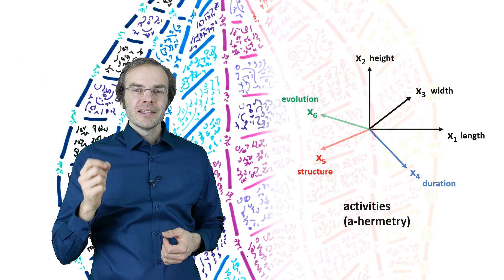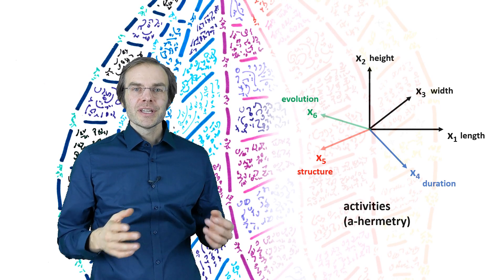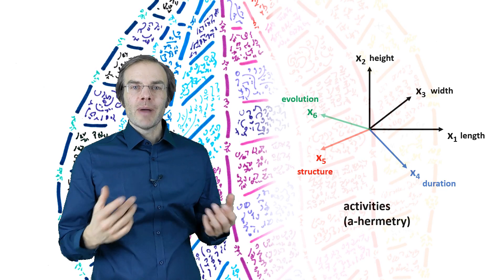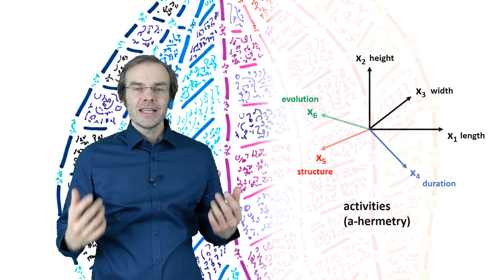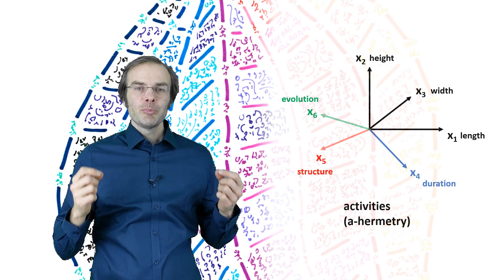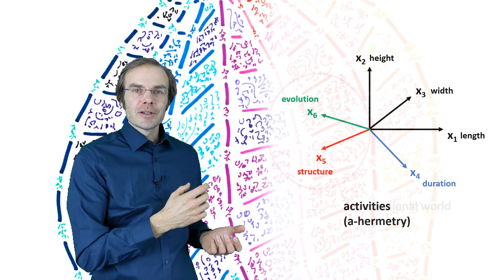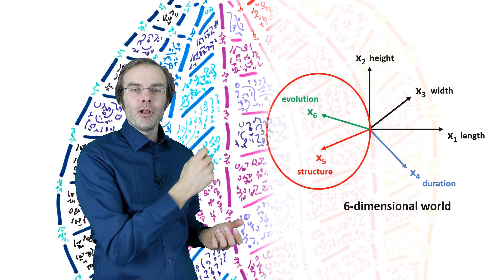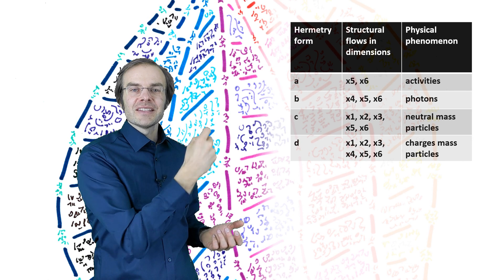This yields something that we must from now on consider a new component in physics. Heim called it activities. Activities have no mass, no charge. They don't oscillate. They are neither matter nor energy. They are indeed pure structural dynamics. You may have noticed that all other hermetry forms have these structural coordinates involved, and therefore some component that is an activity.